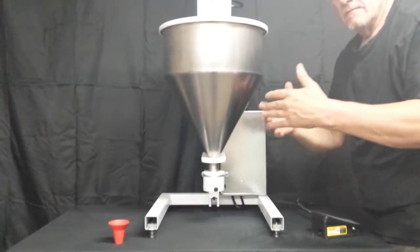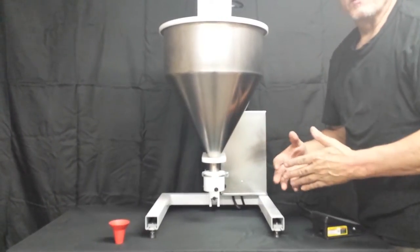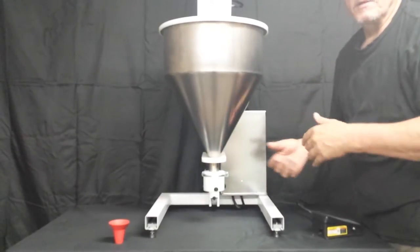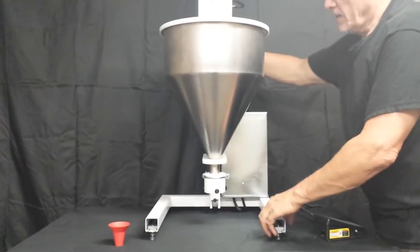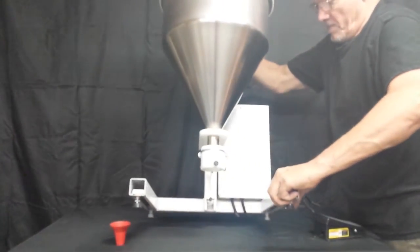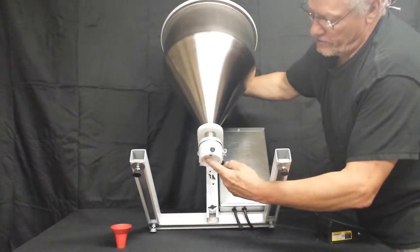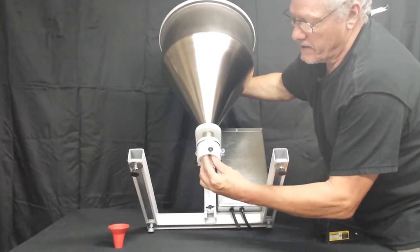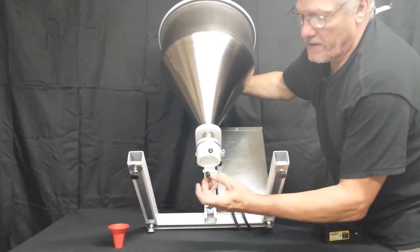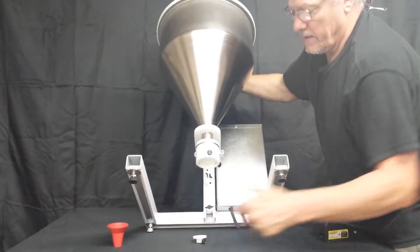Now note that it takes no wrenches to disassemble and reassemble this. Everything is done by thumb screws or wing nuts. Now I'm going to set this up, and as you can see right here, there is a spinner plate. You loosen that thumb screw and remove that spinner plate.